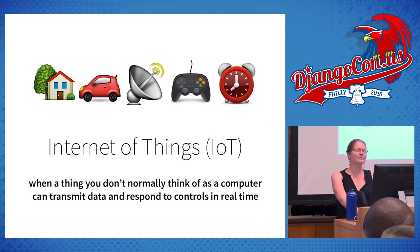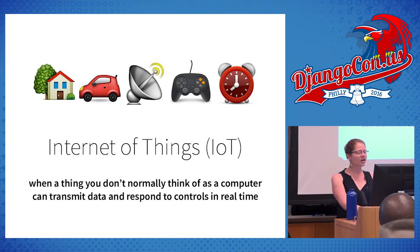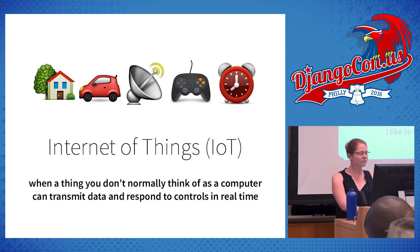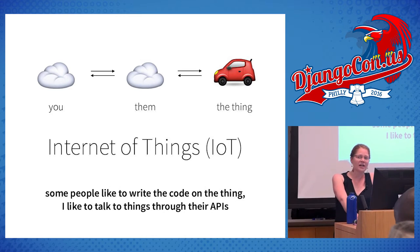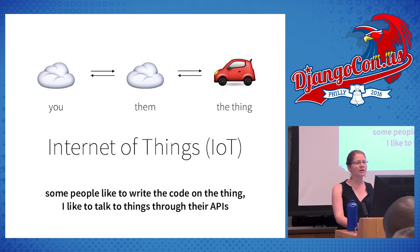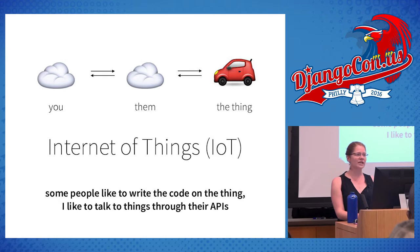The Internet of Things is when something you don't normally think of as a computer — like a thermostat or a car — can receive and transmit data and even respond to controls in real time. When some people talk about IoT, they talk about writing embedded code that runs on the device, but a lot of devices you can buy these days have APIs that the vendor provides. Today I'm going to focus on the use case where you're writing code that interacts with that API.